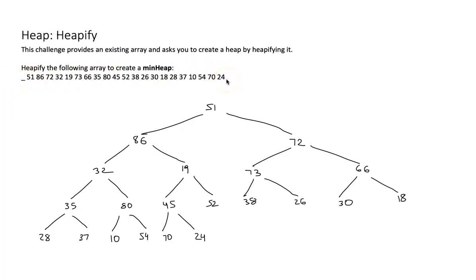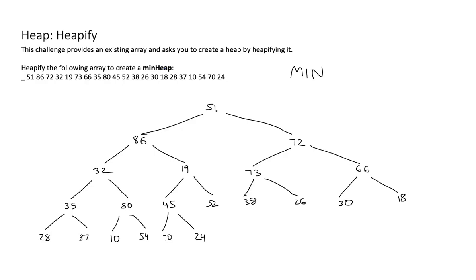Now we have a tree that is complete, but it doesn't fulfill the heap requirement. In my case it's a min-heap, so each of the roots of the tree and subtrees needs to be less or equal than the children. So 51 should be less or equal than the children — that looks good — but 86 is not less or equal to its children. So you can see some fixing is still necessary.